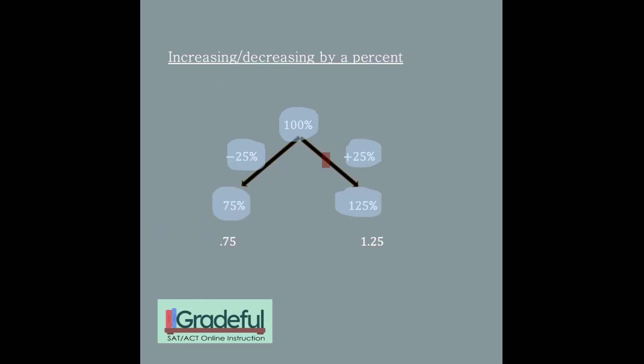Now both of those in decimal form are 1.25 or 0.75. So in other words, if I want to raise something 25%, I'm going to multiply it by 1.25.